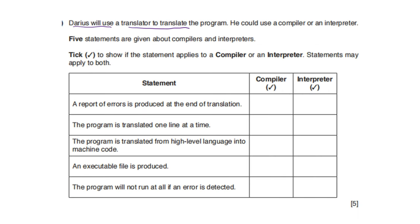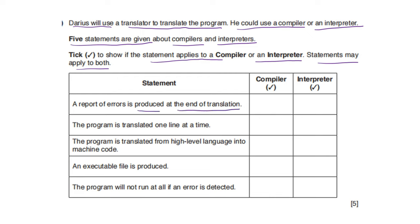Darius will use a translator — either a compiler or an interpreter. Five statements are given; tick whether each applies to compiler or interpreter. A report of errors is produced at the end of translation — compiler. The program is translated one line at a time — interpreter. The program is translated from high level language into machine code — both. An executable file is produced — compiler. The program will not run at all if an error is detected — compiler.